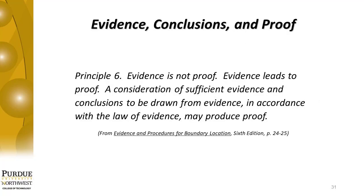Section 2-7 has the title Evidence, Conclusions, and Proof. Principle 6 says that evidence is not proof — evidence leads to proof. A consideration of sufficient evidence and the conclusions drawn from evidence in accordance with the law of evidence may produce proof. We've touched on that in a past section, but this expands on it somewhat. You should read the remaining portions of that section to see how that principle is justified.